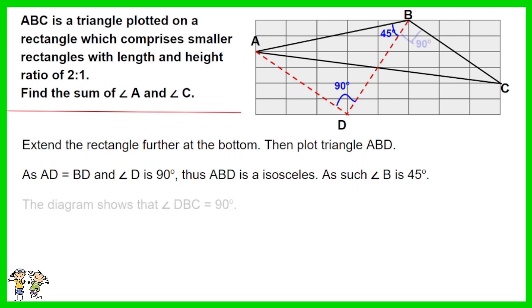The diagram shows that angle DBC equals 90 degrees. Angle ABC equals 45 plus 90 equals 135 degrees. Thus angle A plus angle C equals 180 minus 135 equals 45 degrees.